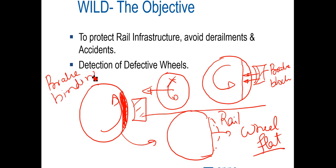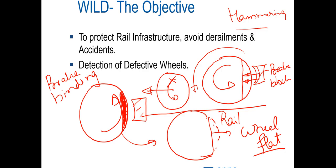If you have a wheel flat, instead of moving smoothly on the rail surface, you get a hammering action — every time the wheel rotates, the flat part hammers on the rails. That hammering is really bad for both the rails and rolling stock. A broken spring can also result in uneven forces on the rails, which over time can severely damage the rail and result in derailments and accidents. Detection of defective wheels is therefore extremely important.